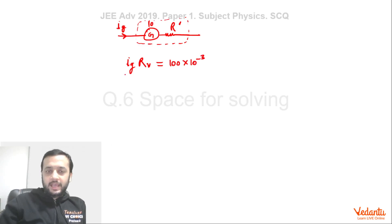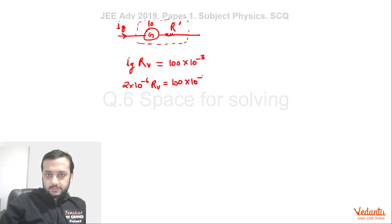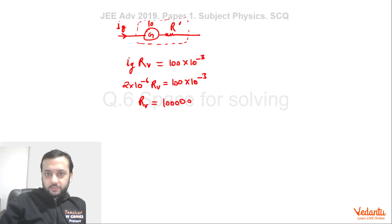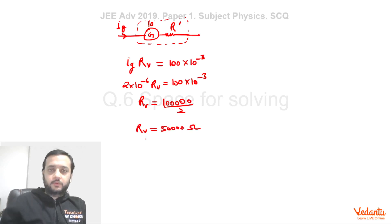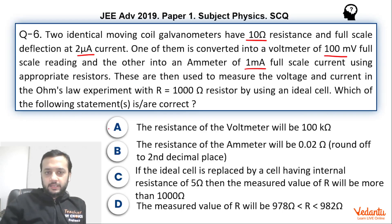With IG equal to 2 × 10⁻⁶ and the voltmeter reading 100 × 10⁻³ volts, RV comes out to be 100,000 divided by 2, which is 50,000 ohms. This makes option A wrong, since it states 1 lakh ohms.